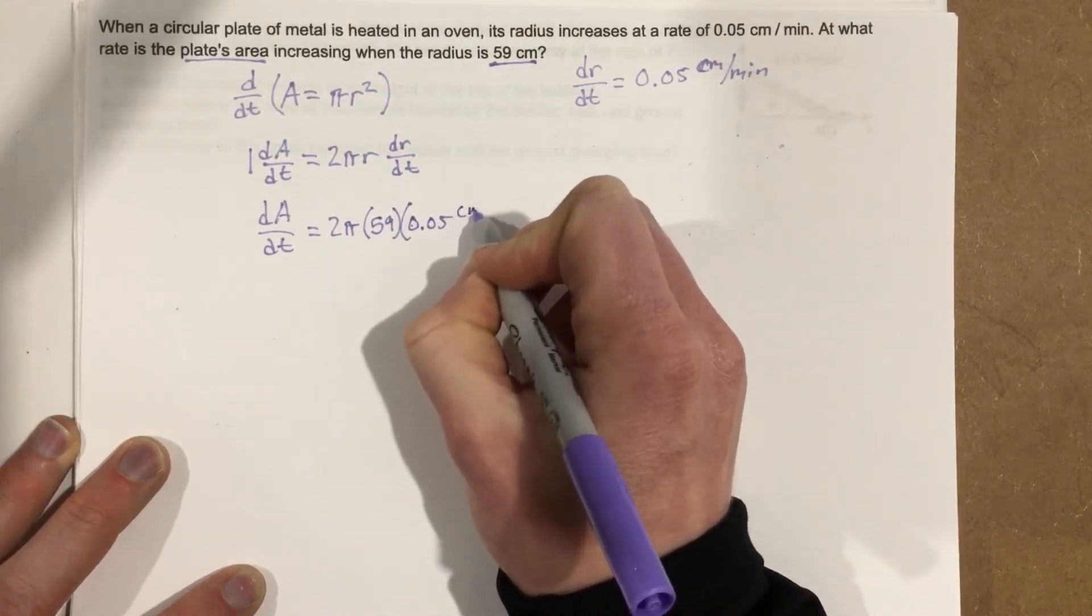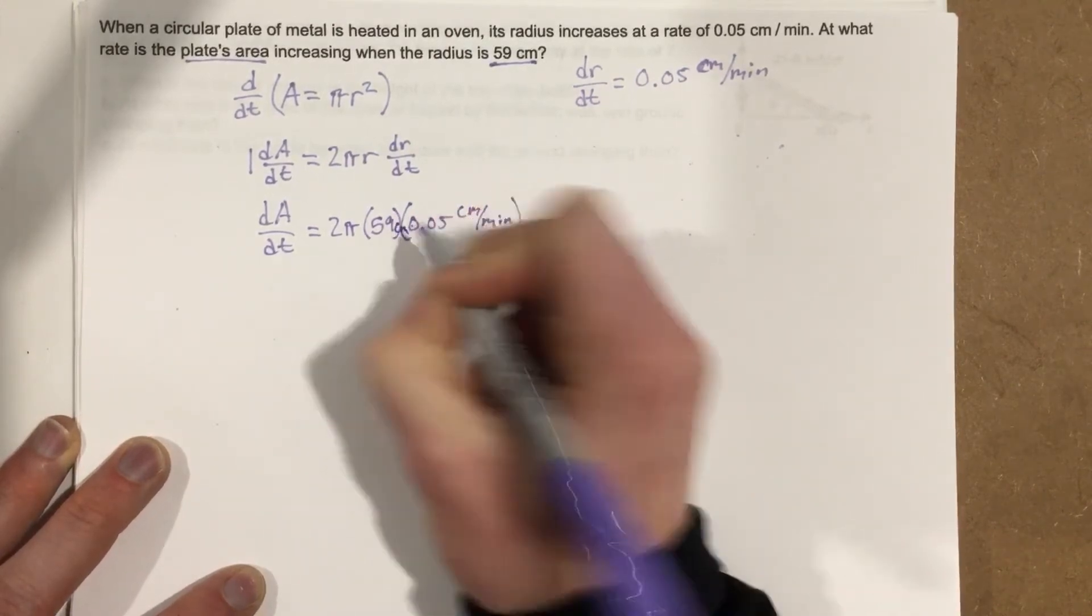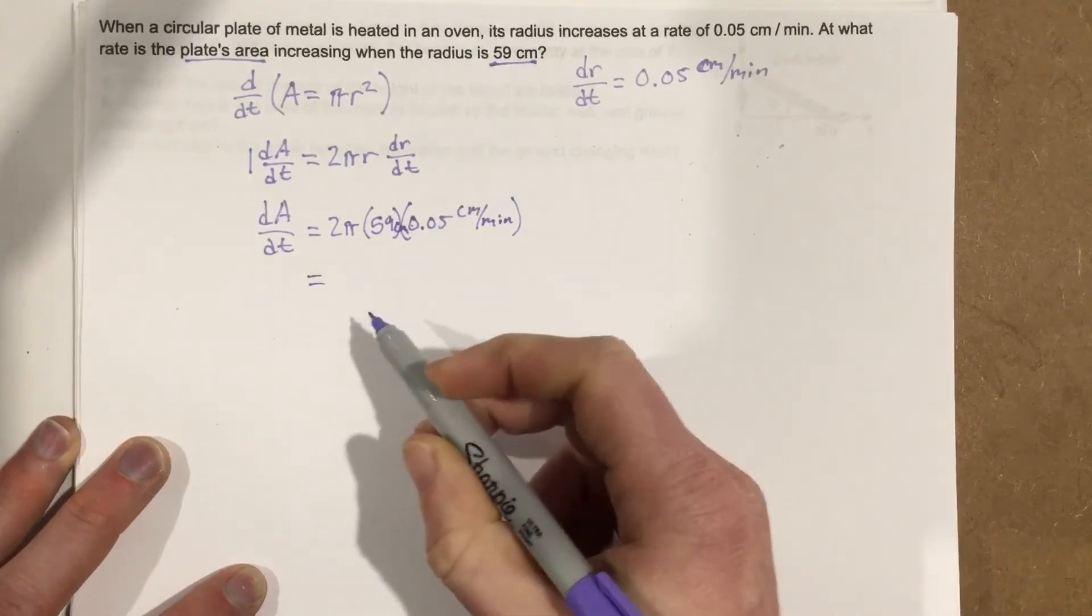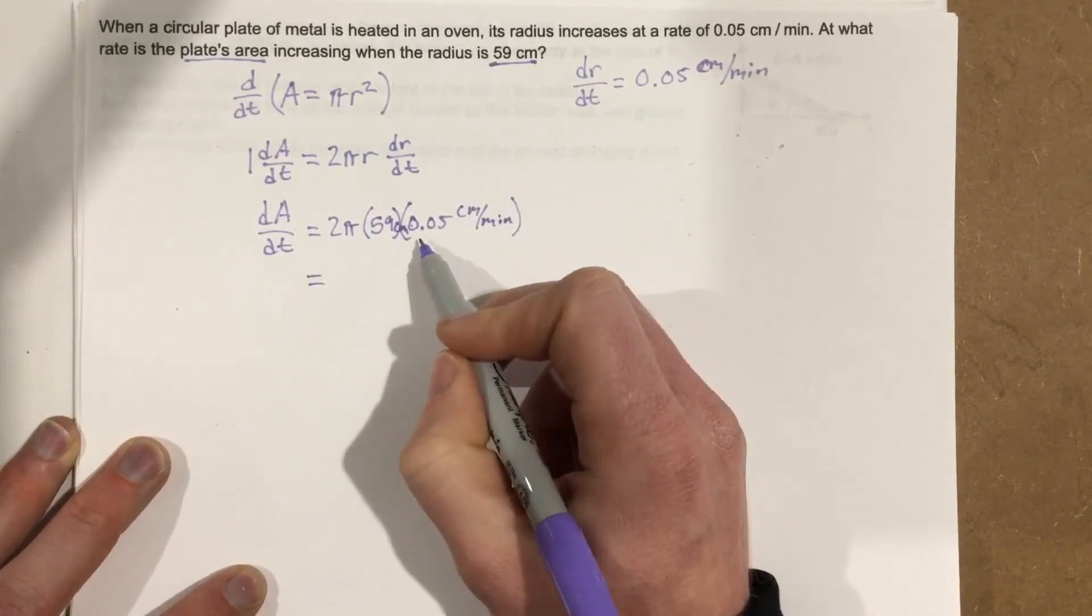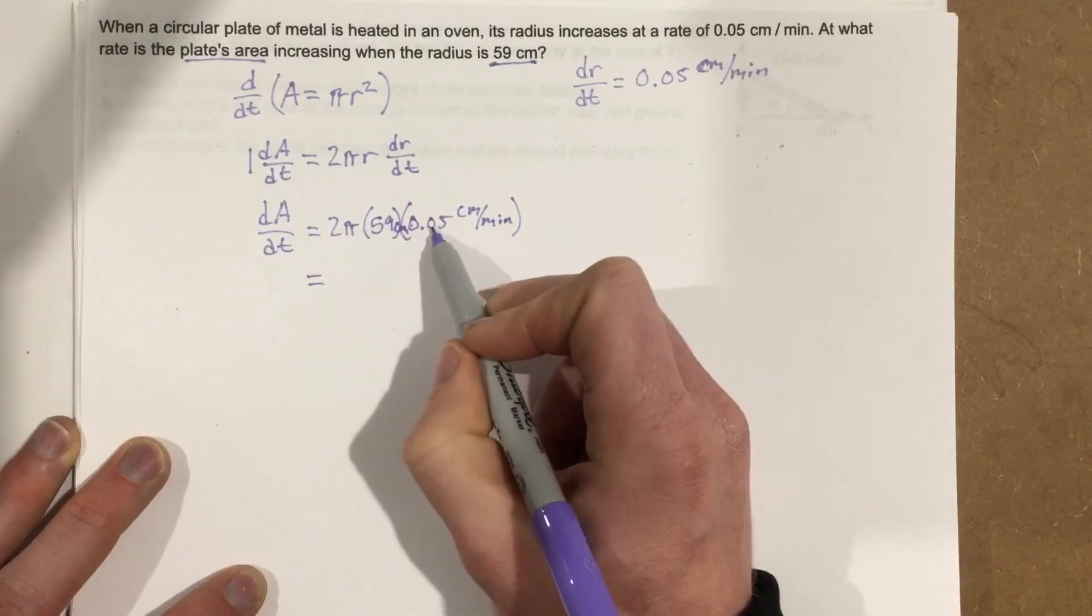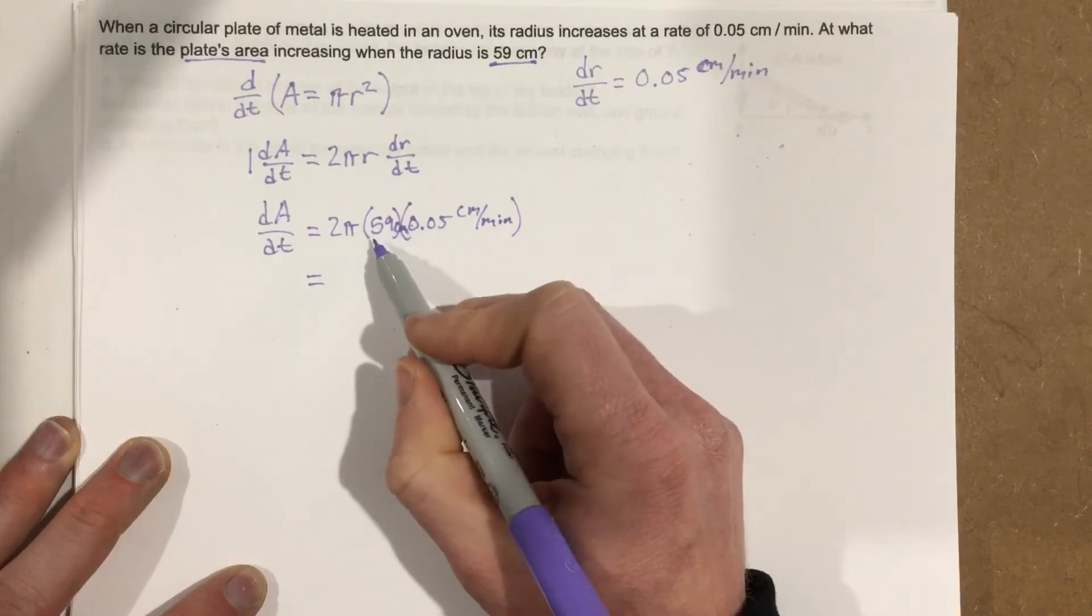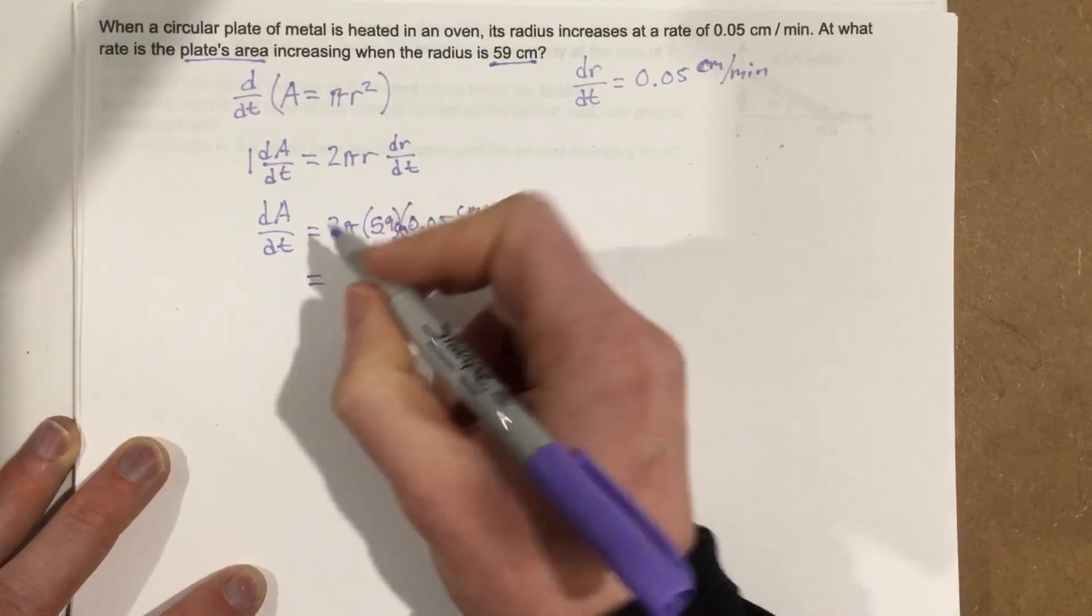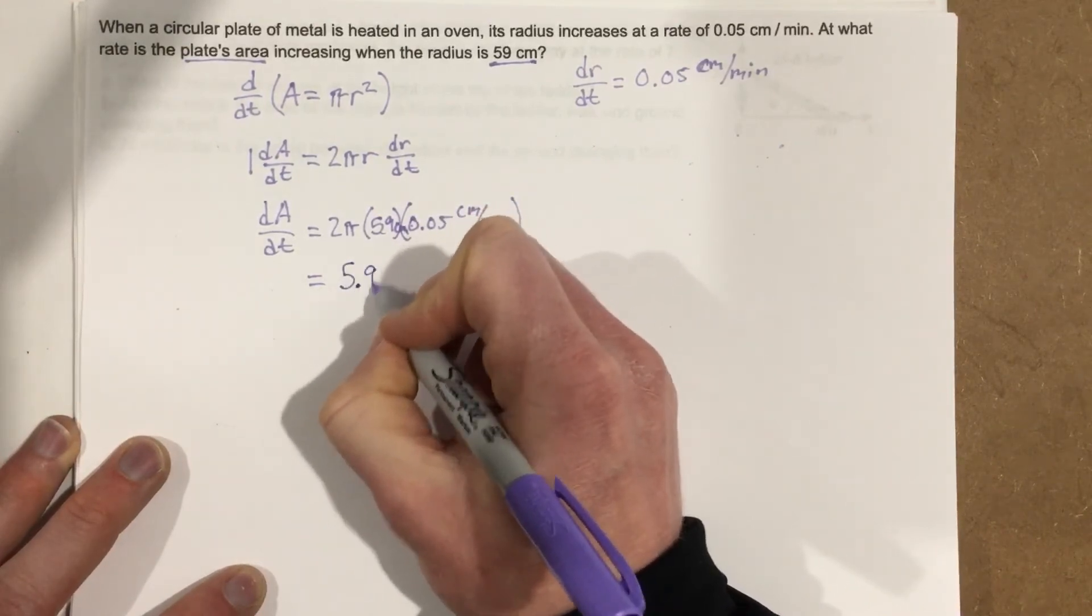This would be centimeters per minute. I forgot a label. This is actually centimeters right here. So when we multiply those, and I think they're going to want you to leave this in terms of pi. So we're going to take, well, 2 times 0.05 would be 0.1. So we end up with 0.1 times 59, which would be 5.9. So we end up with 5.9 pi.